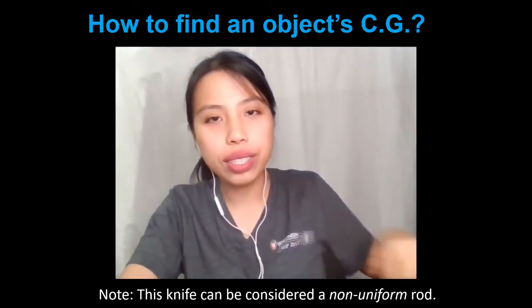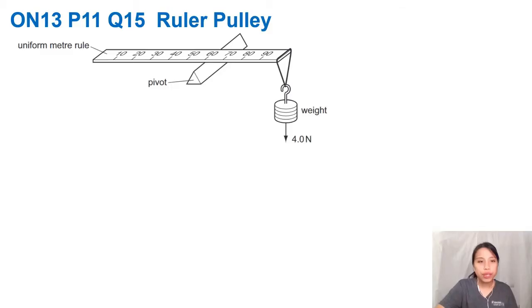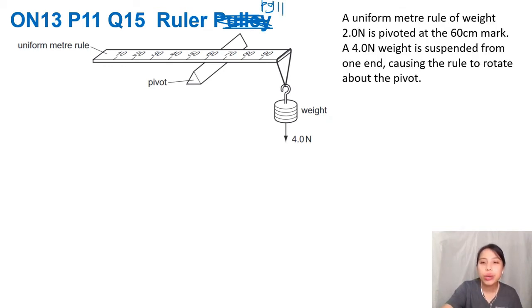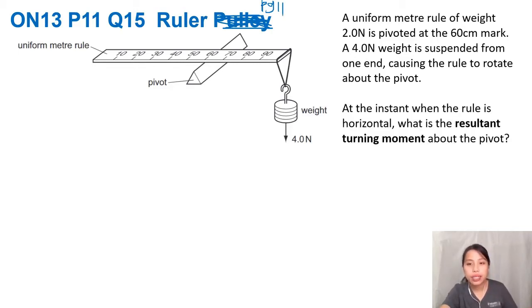Let's look at a partial question to see how we can do that. First one is a ruler. This is on page 11 if you have the handout and want to try it out as well. You can pause the video and do it ahead of me. But the question goes like this: You have a ruler pivoted with that triangle thing. A 4N weight is suspended causing it to rotate. At the instant when it's horizontal, what is the resultant turning moment about the pivot?